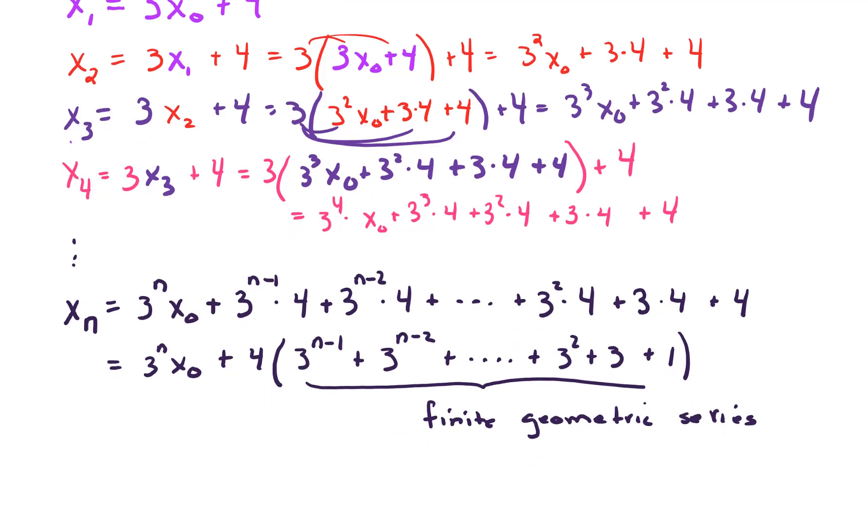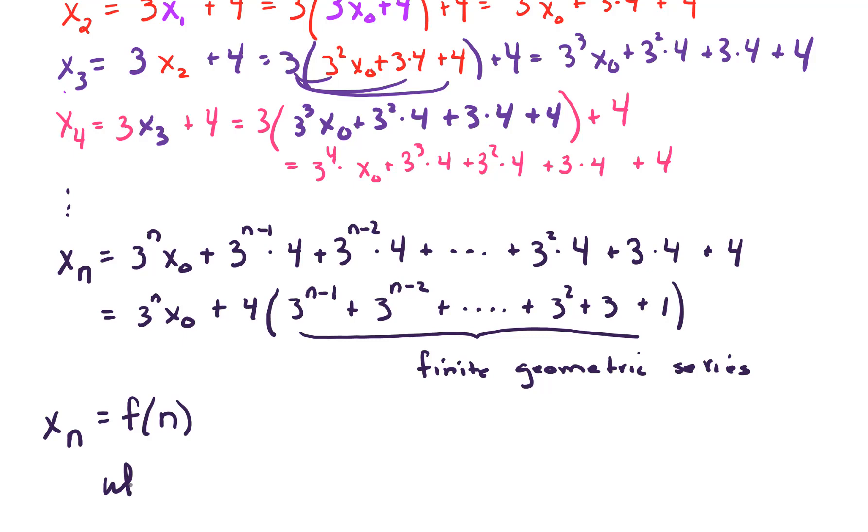And we've done it, we could clean it up more, but essentially our work is done. So here's the bottom line, x sub n is a function of n, and that function of n, or t, or whatever your input variable is, it is given by 3 to the n times x0 plus 4 times 3 to the n minus 1, etc. And that's our final answer.